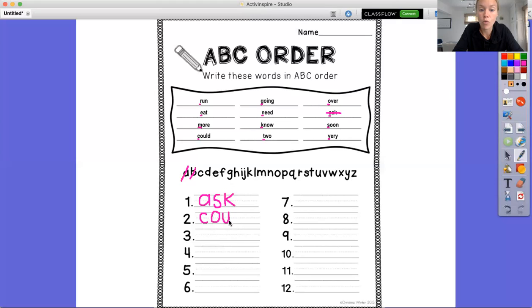I'm going to do one more for you. And then you guys will be on your own to finish. So now I'm going to cross off could. I'm going to cross off C.